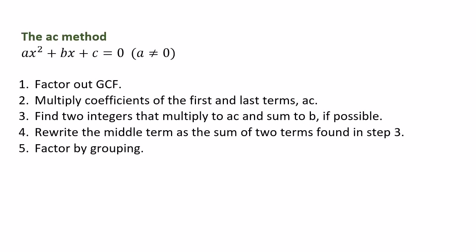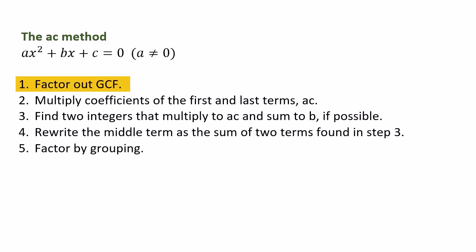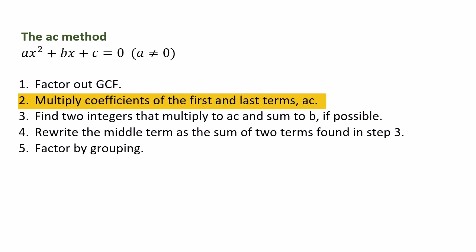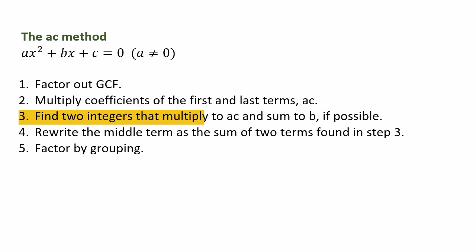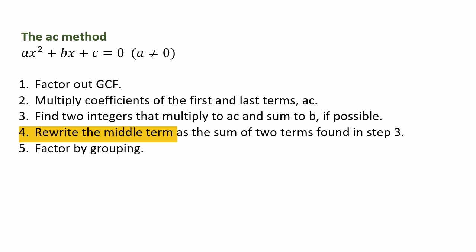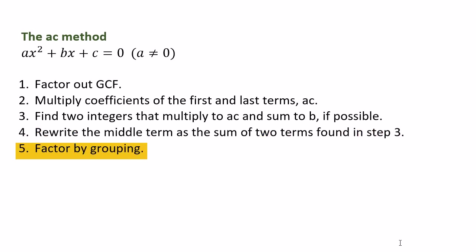Next we'll talk about the AC method for quadratic equations ax² + bx + c = 0, where a ≠ 0. First, factor out the greatest common factor. Then multiply the coefficients of the first and last terms — multiply a and c together. Seek two integers that multiply to the product AC and sum to b if possible. Then rewrite the middle term as the sum of those two terms and factor by grouping.